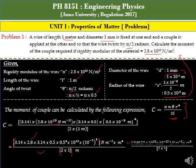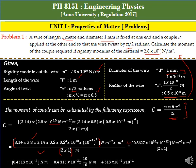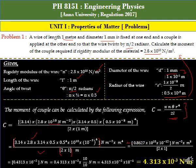By simplifying all the values — 0.8627 × 10¹⁰ × 10⁻² divided by 2 × 1 — we arrive at the final answer: C = 4.313 × 10⁻³ Newton meter.